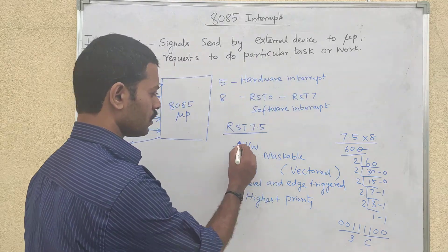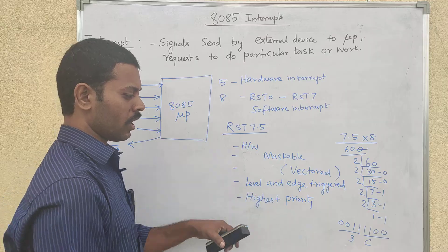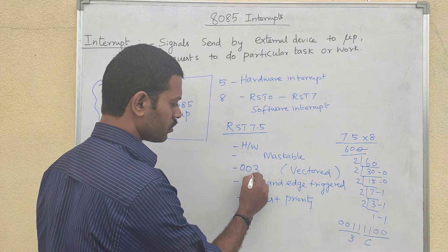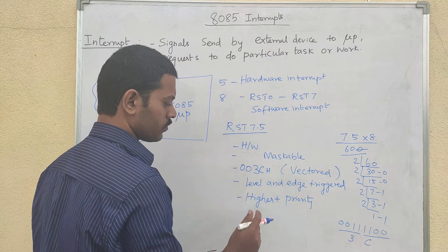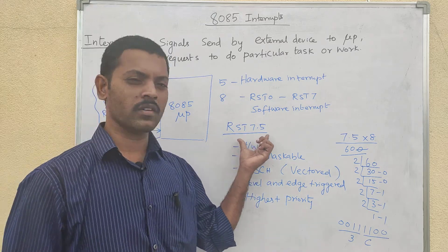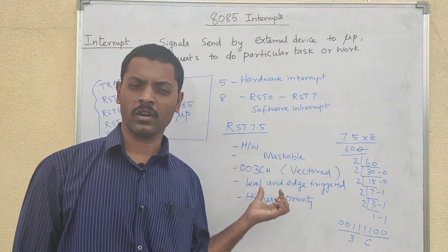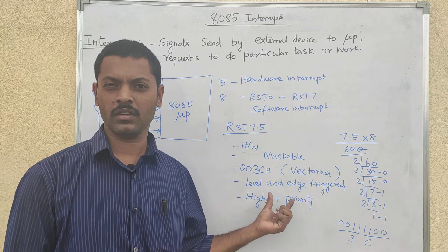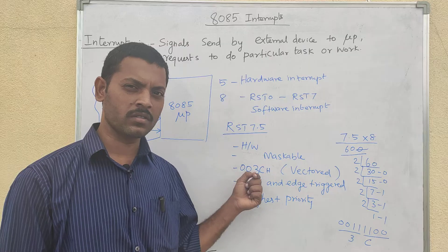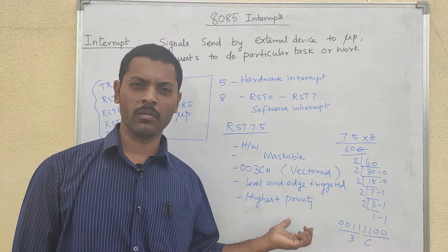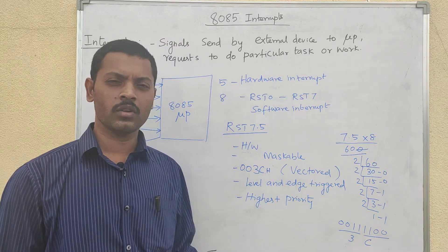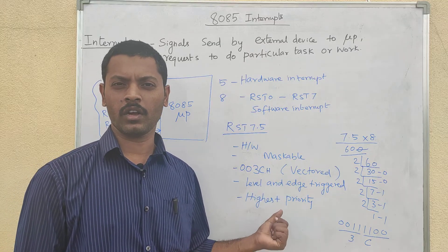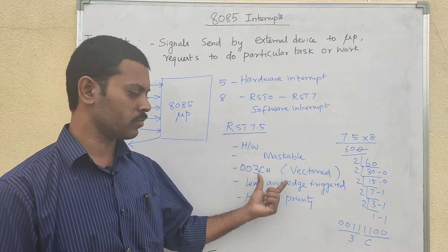The ISR address for RST7.5 is 003CH, which is the vector address — the interrupt service routine address. Similarly, Trap corresponds to RST4.5, which is also a vector interrupt with its own fixed vector address.